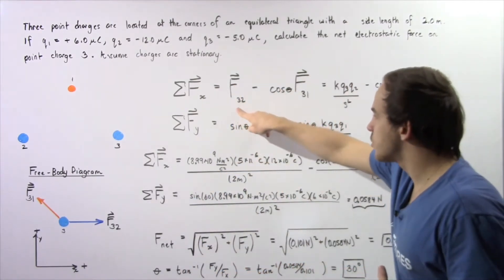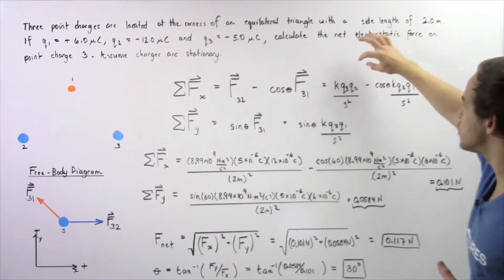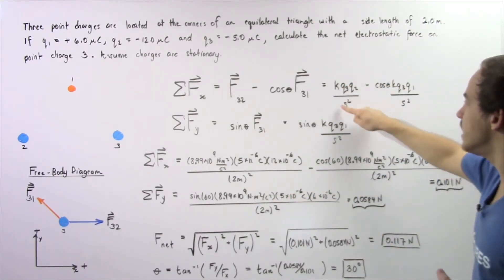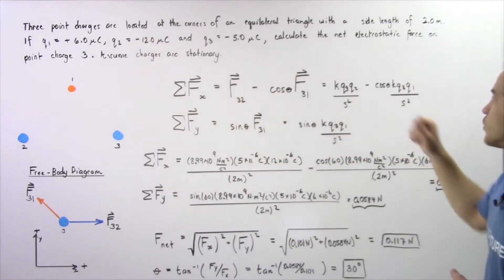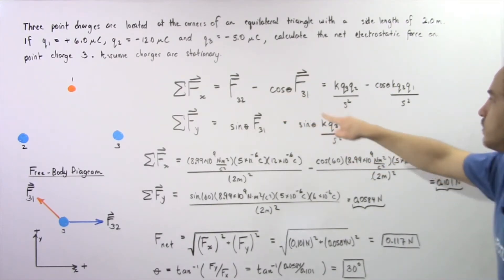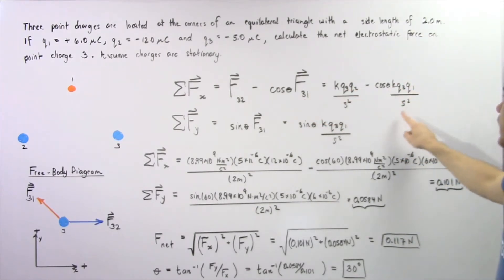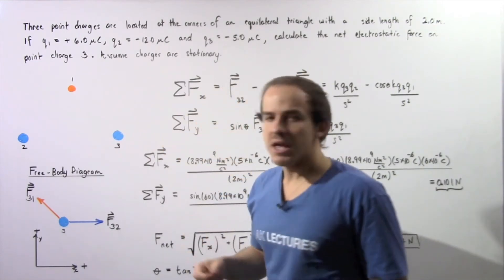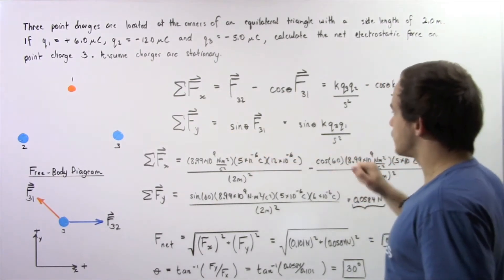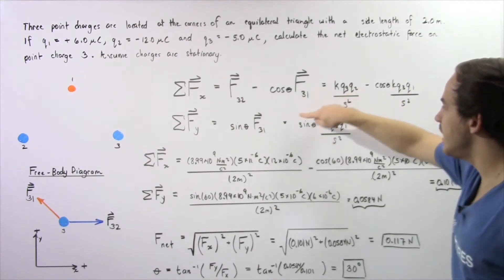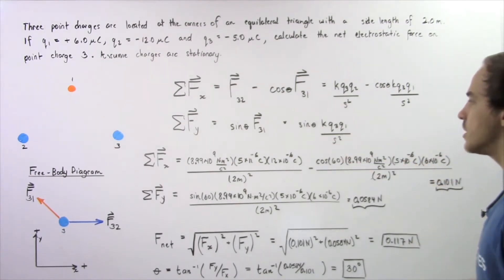Now let's apply Coulomb's law. Force F32 equals the constant k multiplied by charge q3 multiplied by charge q2, divided by the distance squared (s squared). And we subtract cosine of theta multiplied by k times q3 times q1 divided by s squared. For the y-component, it becomes sine of theta multiplied by k times q3 times q1 divided by s squared. Because we're dealing with an equilateral triangle, the distance s is the same in both cases.